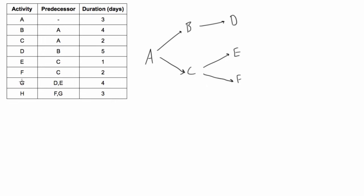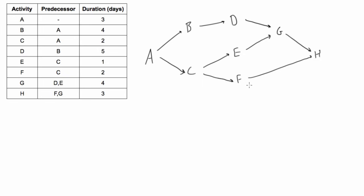Next up we have activity G — this depends on D and E, so we need arrows coming from both of these leading into activity G. Lastly, activity H depends on activities F and G, so F and G both lead into H. This looks right — we have no unnecessary crossovers so we don't have to redo it or shift anything around.